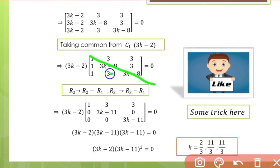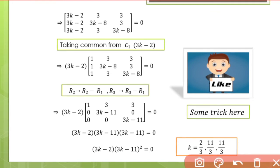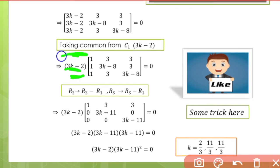We apply row operations: R2 minus R1 and R3 minus R1. This makes the first column elements below the diagonal zero. We get zeros in those positions.